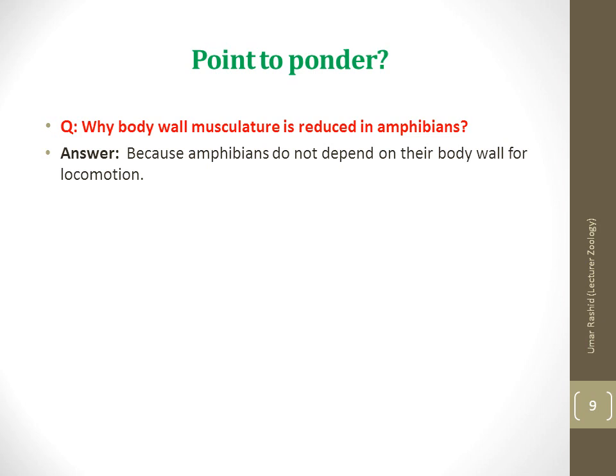A point to consider: why is body wall musculature reduced in amphibians? Because amphibians do not depend on their body wall for locomotion. The trunk musculature used in fishes is segmentally organized into powerful muscular bands called myomeres for bilateral flexion locomotion. During amphibian evolution, dorsal or epaxial muscles are arranged to support the head and brace the vertebral column, while ventral or hypaxial muscles — used almost exclusively for locomotion in fishes, caecilians and salamanders — serve mainly to compress the abdomen for breathing and trunk flexion in frogs.